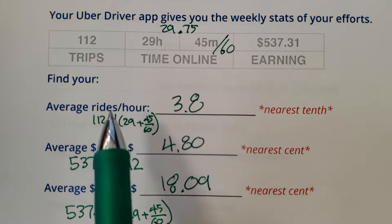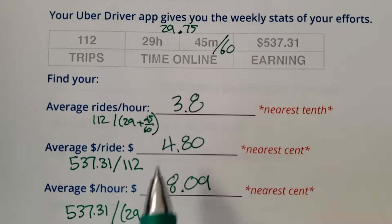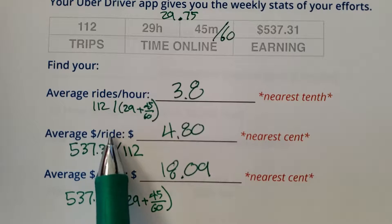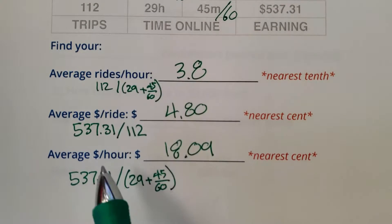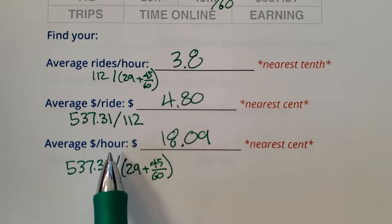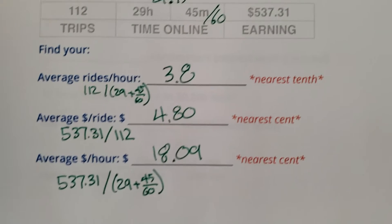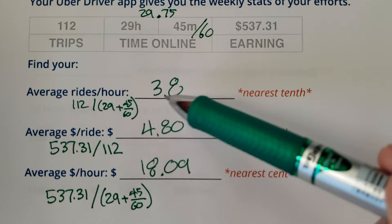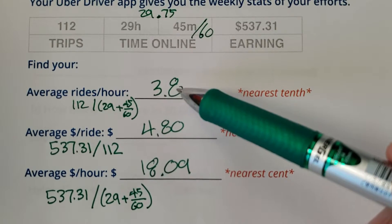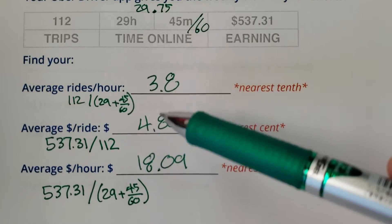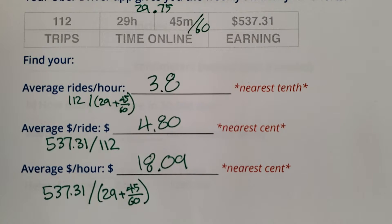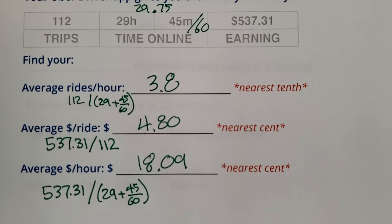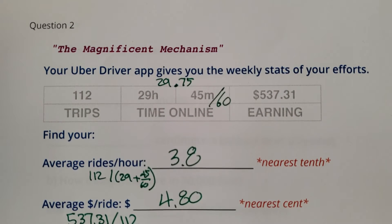So there we go, students. You had your stats. To find rides per hour, you take rides divided by hours. To find dollars per ride, you take dollars divided by the number of rides. To find average dollars per hour, you do dollars divided by hours. It looks like you averaged 3.8 rides per hour, each ride was about $4.80, and you made about $18.09 per hour. That was the Magnificent Mechanism.